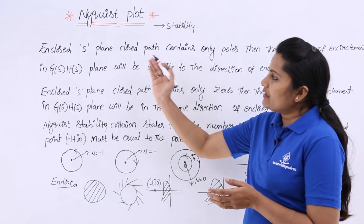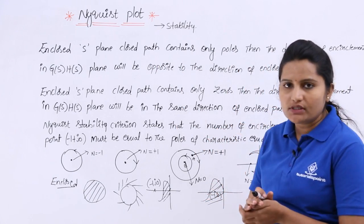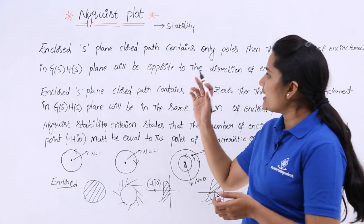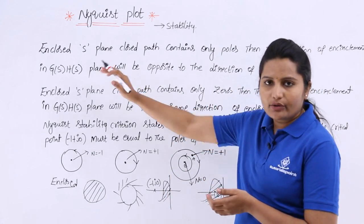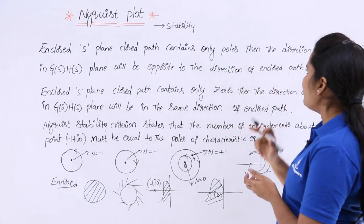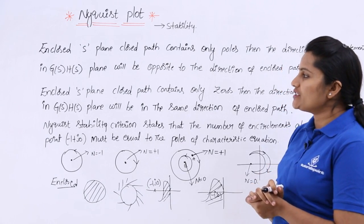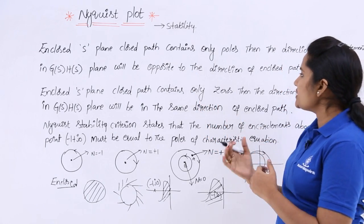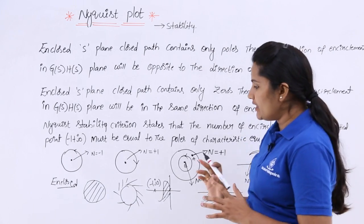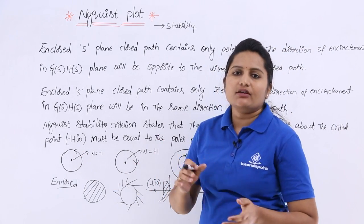If the enclosed S-plane closed path contains only poles, then the direction of encirclement in the G(S)·H(S) plane will be opposite to the direction of the closed path. Whenever you are having a negative direction, you can say a pole is enclosed in that region.